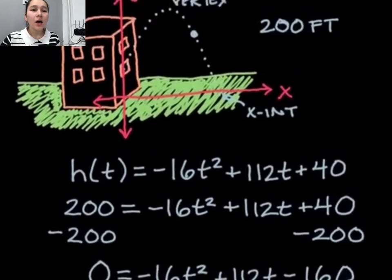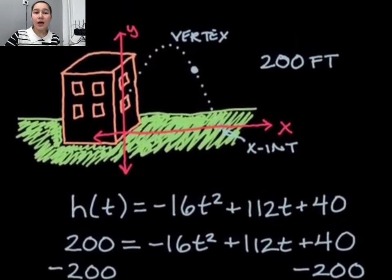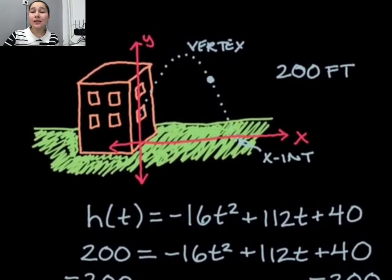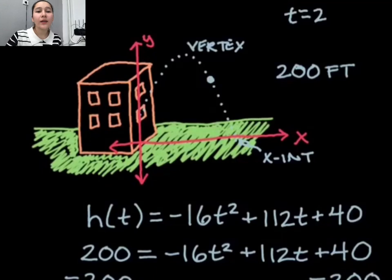So back up here we get the following answers. Again, we had t equals 2, t equals 5. And for many word problems sometimes only one answer out of the two is valid, but here we actually have both answers being valid.